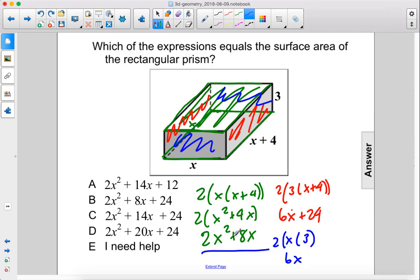So we add 2x squared plus 8x plus 6x plus 24 plus 6x. We get 2x squared plus 20x plus 24, answer D.